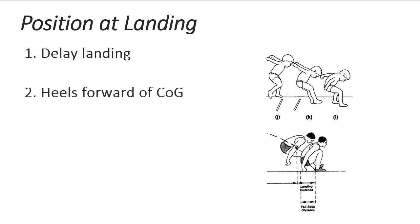The performer could also maximize the landing distance by assuming a body position with the heels well forward of the center of gravity. The landing distance could be improved if the hips were more flexed and the knees were more extended at the same instance.